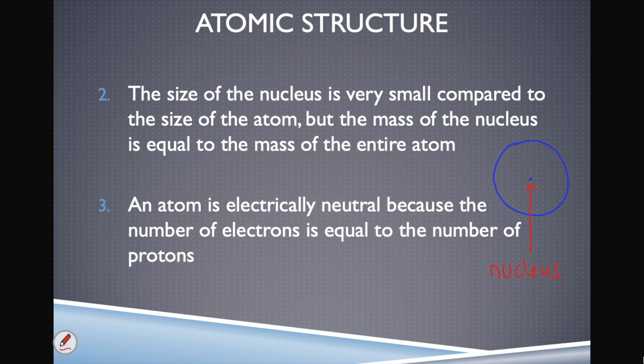The nucleus is teeny tiny compared to how much space the whole atom takes up. The nucleus has our protons and neutrons, and then the whole space outside the nucleus isn't really empty — electrons are on the move throughout there in their set energy pathway. That's what Bohr told us.